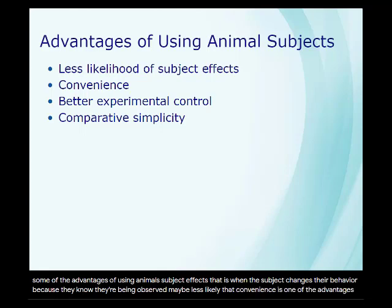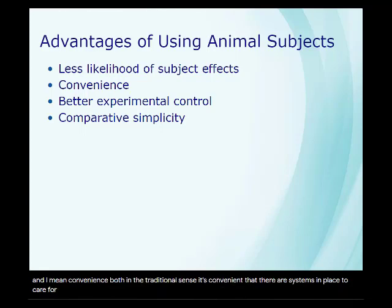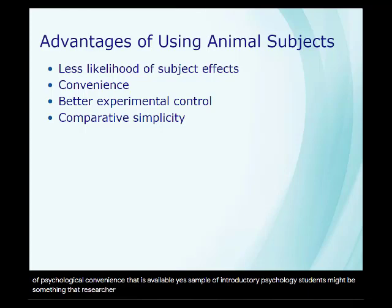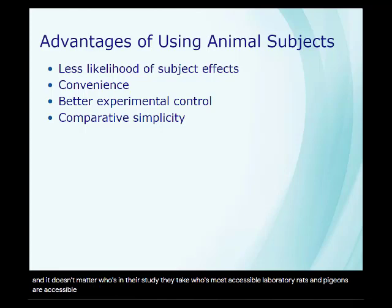Convenience is one of the advantages — both in the traditional sense, where systems are in place to care for laboratory animals making research easier, and in the sense of psychological convenience, meaning availability. Just like a convenient sample of introductory psychology students is used when it doesn't matter who's in the study, laboratory rats and pigeons are accessible in a similar way.